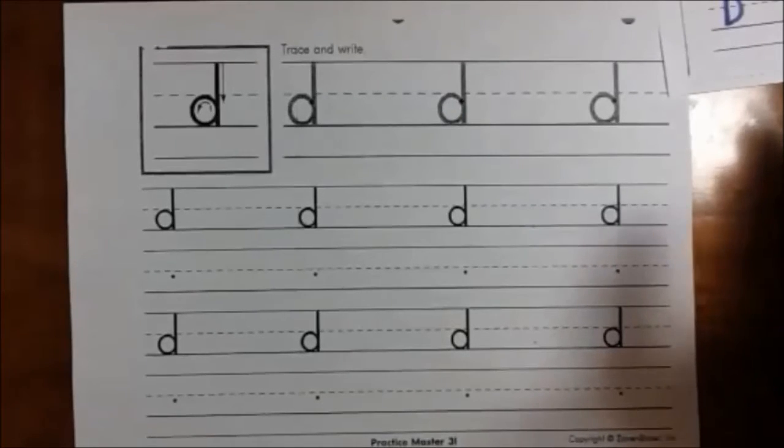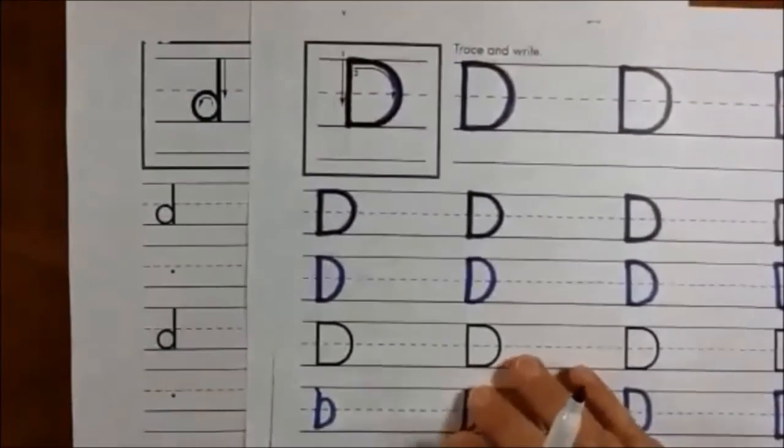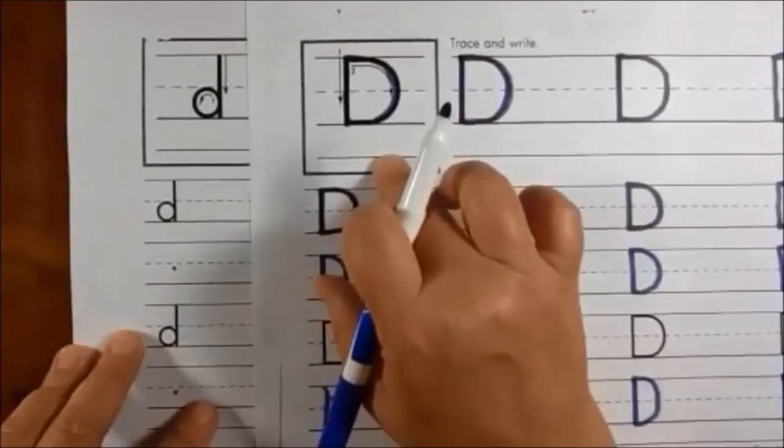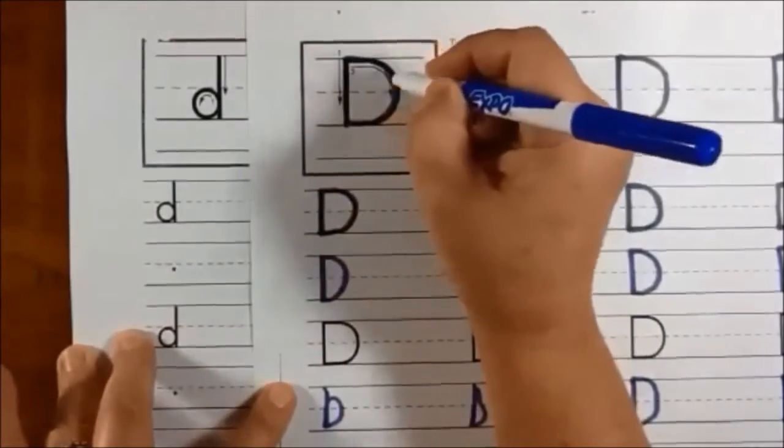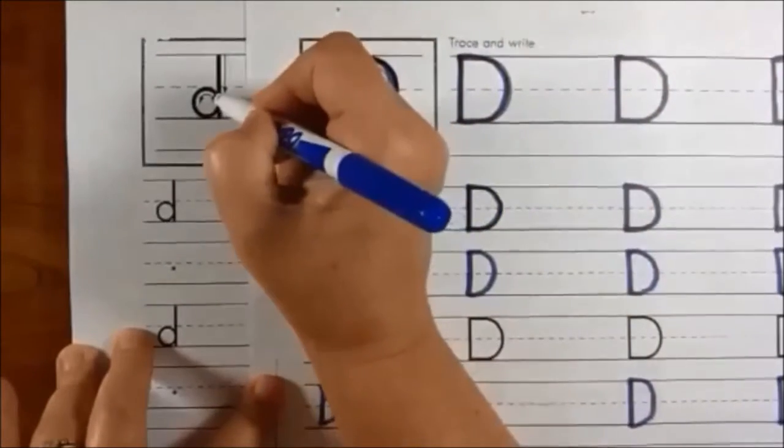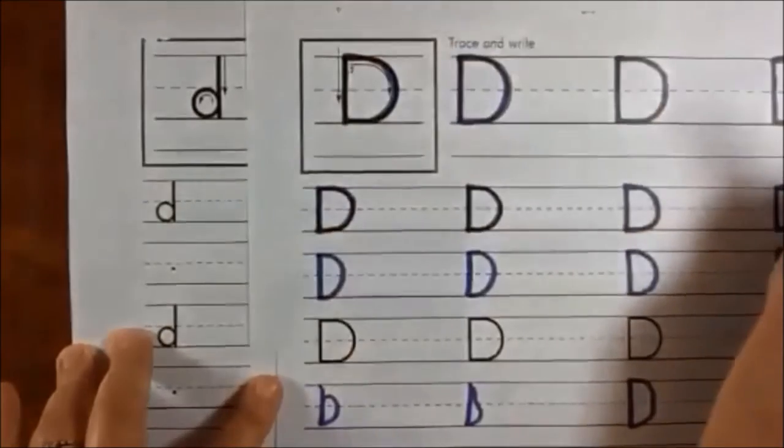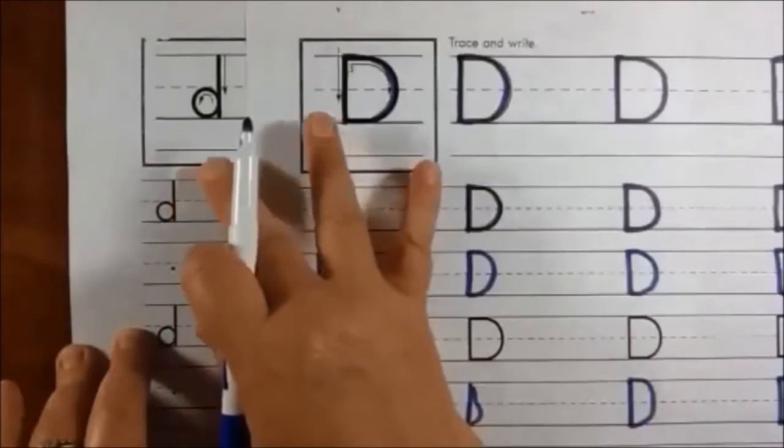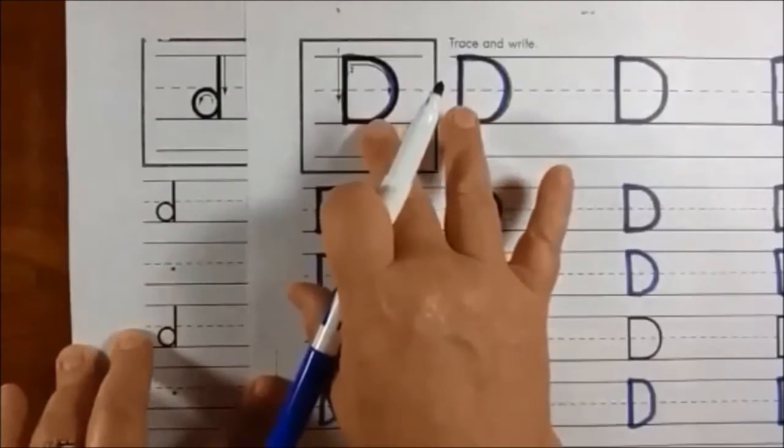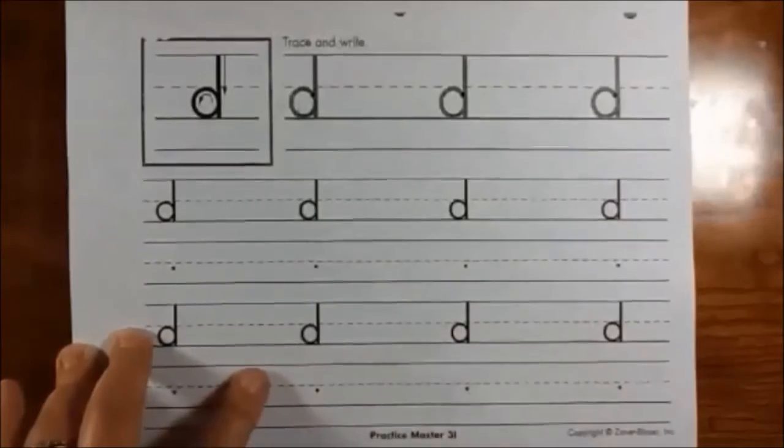Let's learn how to make the lowercase D. Let's look again at the uppercase D so you can see the difference. This is the uppercase D. It's made of a straight line down and a large curve. This is the lowercase D. It starts with a small curve and then goes up and down. You need to memorize this one. The biggest key for this is knowing where to start. This is its partner, the uppercase D, and the lowercase D.